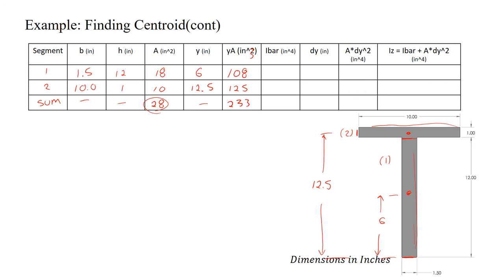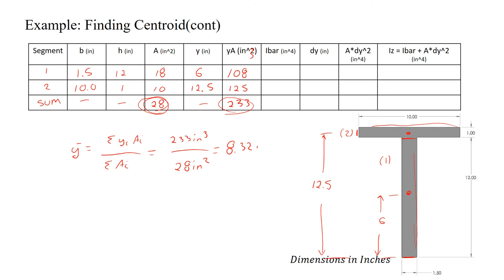Using the centroid equation, y-bar = Σ(yi·Ai) / Σ(Ai) = 233 inches cubed / 28 inches squared = 8.32 inches. That is the centroid location of our entire cross section.